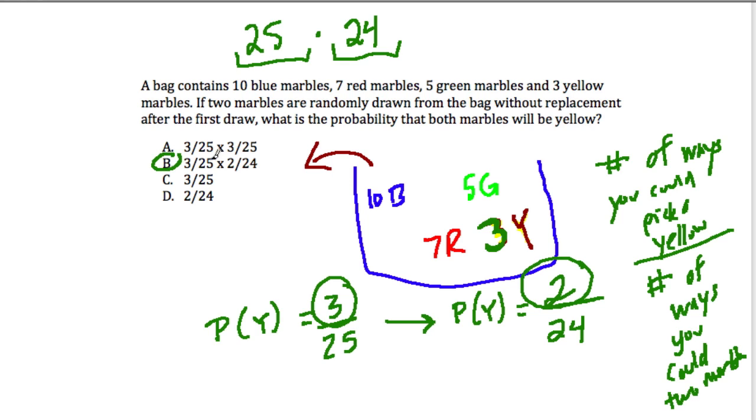And if we had simplified, we would do three times two, which is six, and then 25 times 24 as a denominator, which I'm not going to bother working out here. Okay, hope that helped.